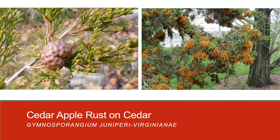On juniper hosts, rust is hard to miss. The pathogen forms large galls, which are basically a mass of mycelium surrounded by a hard coat. In the spring, during rainy periods, the galls mature, swell, and produce orange gelatinous horn-like growths, as shown in the image on the right.